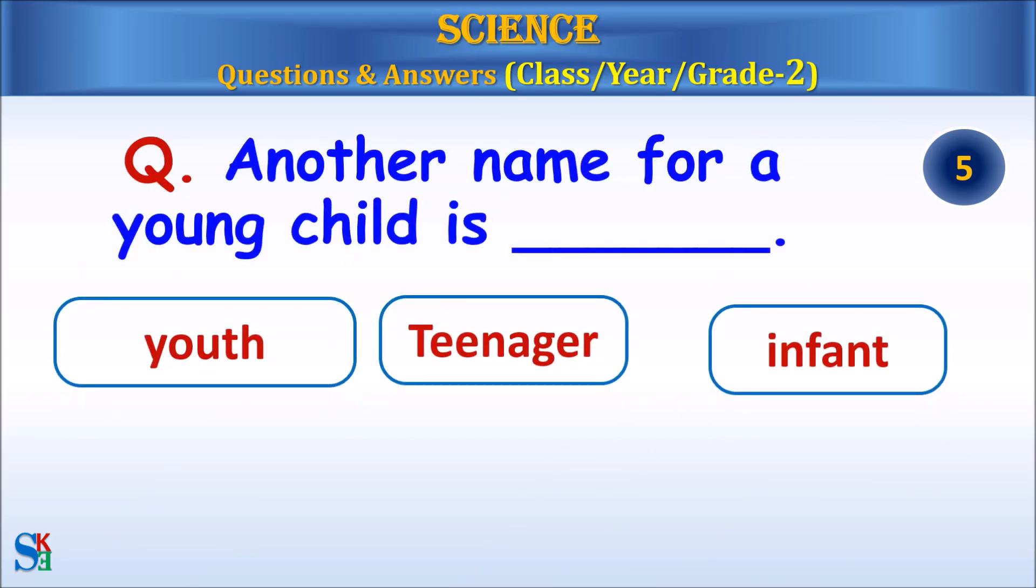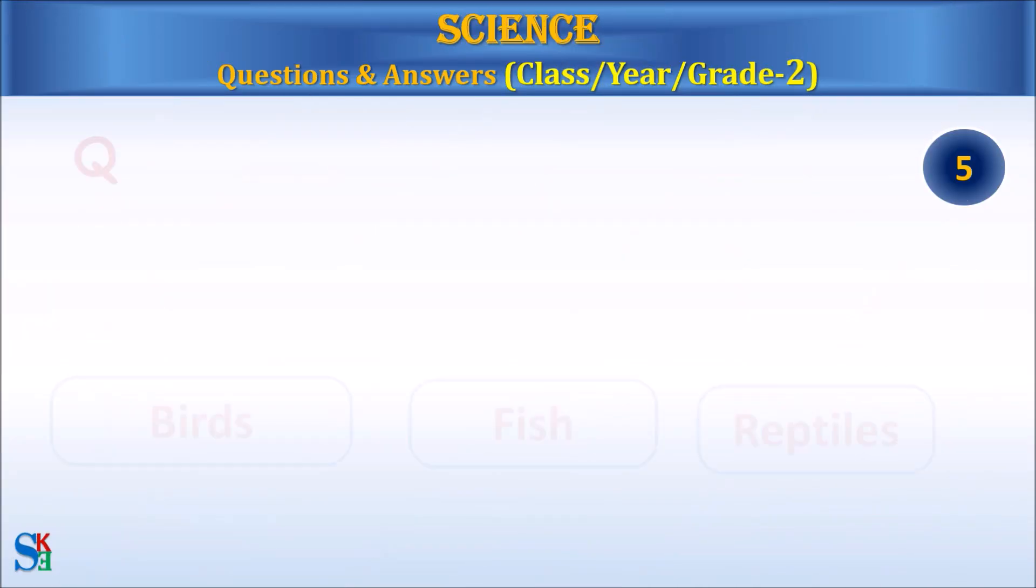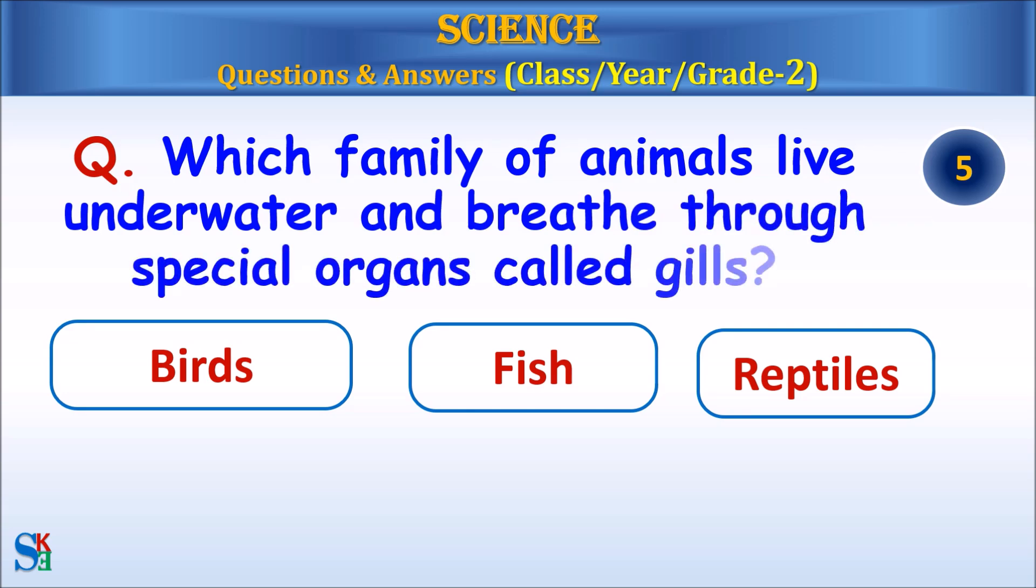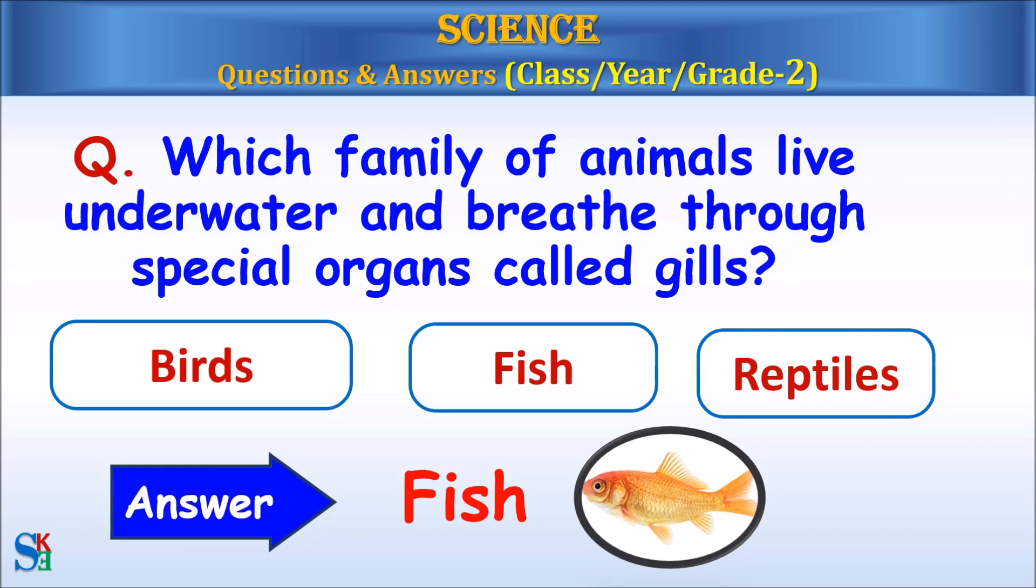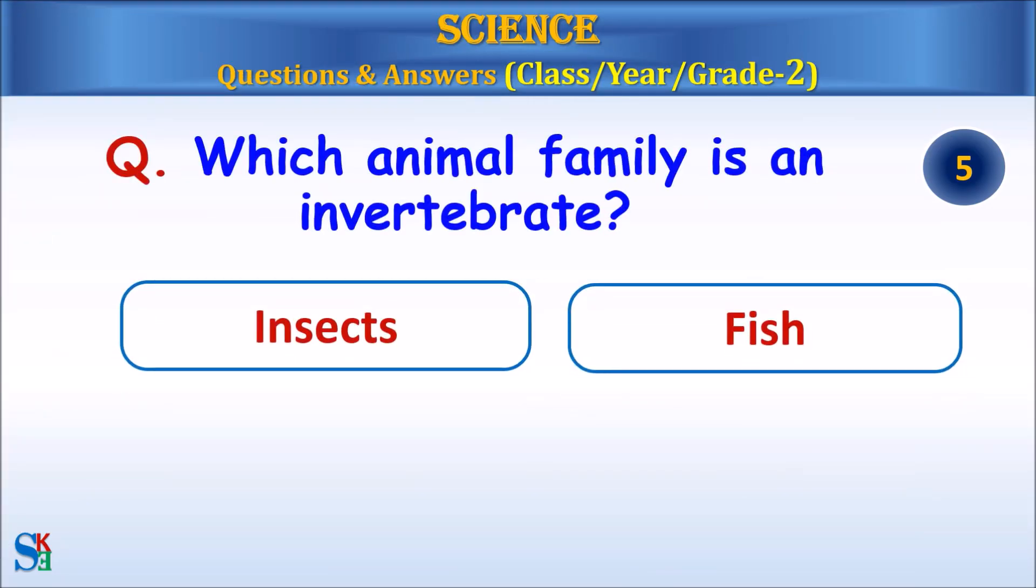Another name for a young child is youth, teenager or infant. Answer, infant. Which family of animals live under water and breathe through special organs called gills? Birds, fish or reptiles? Answer, fish. Which animal family is an invertebrate? Insects or fish? Answer, insects.